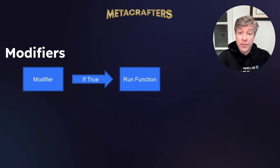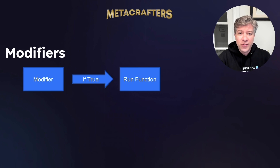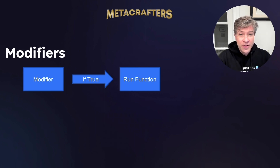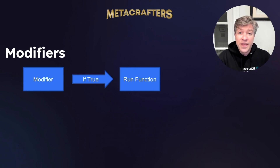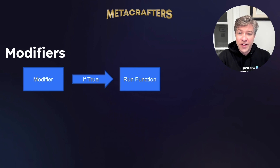For example, suppose you have a function called 'access Jeff's data' and you want to make sure only Jeff can access it. To do that, you make a modifier called isJeff and attach it to the function 'access Jeff's data'. That way, the function executes only when the modifier isJeff evaluates to true.